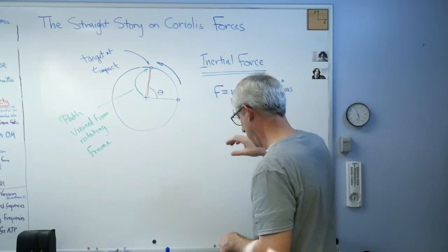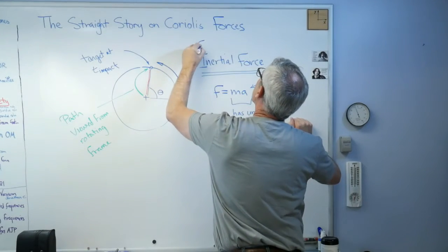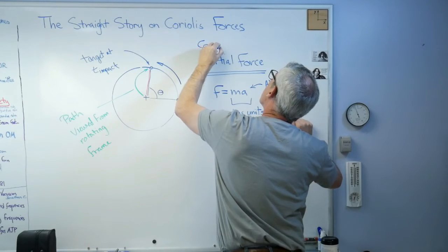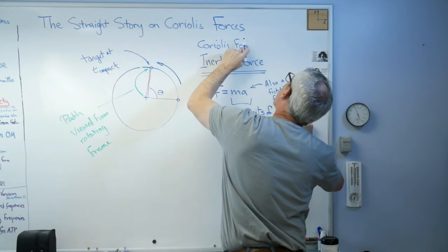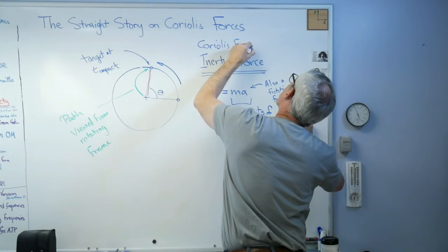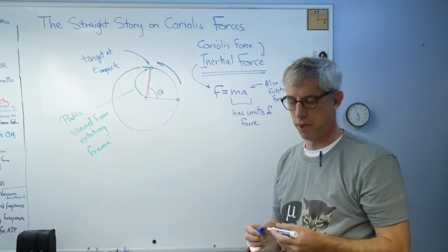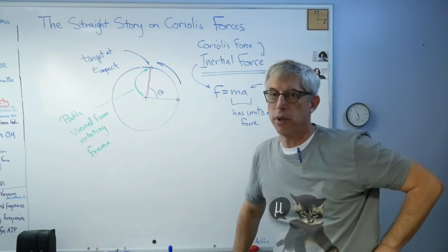So when you see a Coriolis force, that's an inertial force. It's kind of like that. Now that's linear and this is rotational, so it's not exact. This is an analogy, it's not an exact description.